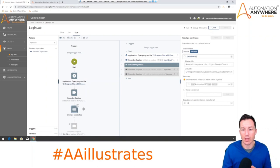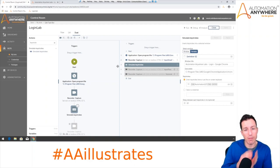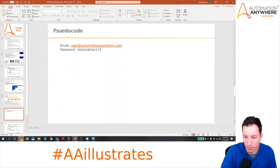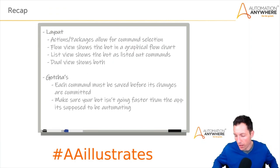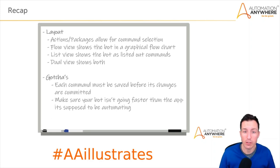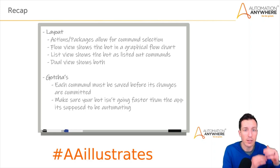It's fun to test around with different ways to solve the same problem — to do it efficiently and still have the bot work, but maybe in a slightly different way. Let's switch back to our PowerPoint for a brief recap. For our layout, we talked about actions and packages that allow for command selection. One of the really cool things about A2019 is that it's modular — as packages are updated or new packages become available, you can add those to your tool set. And as Bot Store gets integrated with A2019, that's going to really explode the available packages.